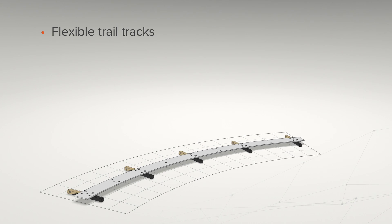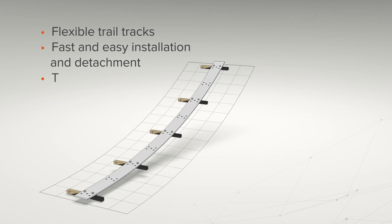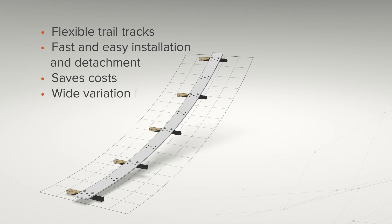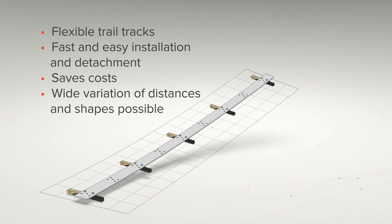Flexible rail tracks can be bent to weld curved surfaces. Fast and easy installation and detachment save costs and enable a wide variation of limit welding distances and shapes.